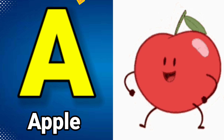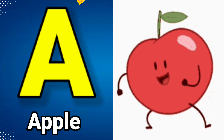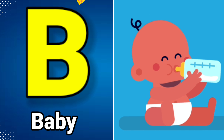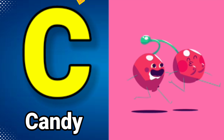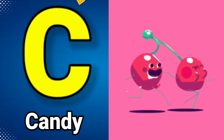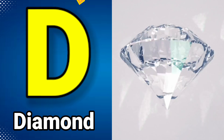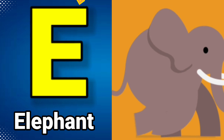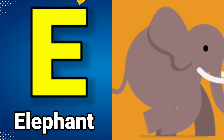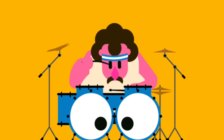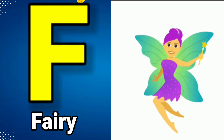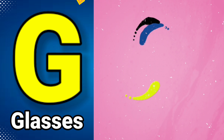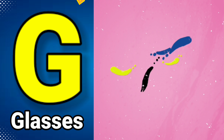A is for Apple. A-A-Apple. B is for Baby. B-B-Baby. C is for Candy. C-C-Candy. D is for Diamond. D-D-Diamond. E is for Elephant. E-E-Elephant. F is for Fairy. F-F-Fairy. G is for Glasses. G-G-Glasses.